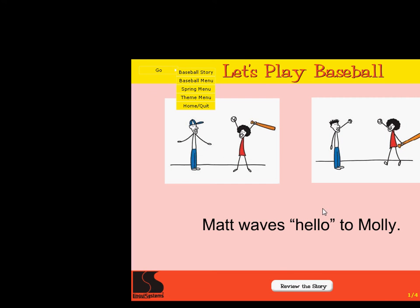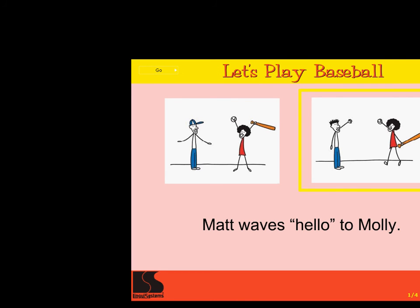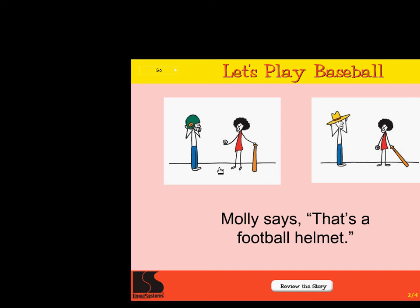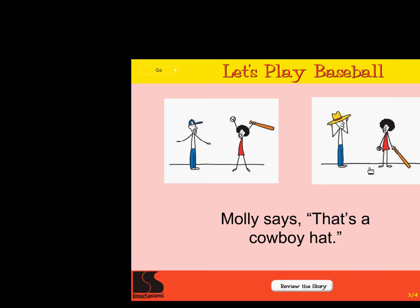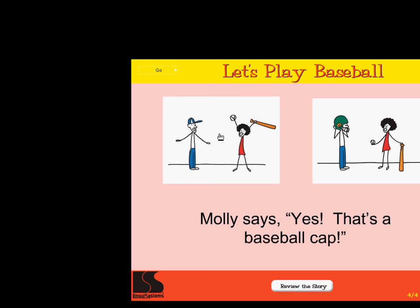Click on the picture that matches these words: Matt waves hello to Molly. Excellent! Click on the picture that matches these words: Molly says, That's a football helmet. Correct! Click on the picture that matches these words: Molly says, That's a cowboy hat. Super! Click on the picture that matches these words: Molly says, That's a baseball cap. Right on!